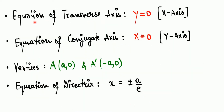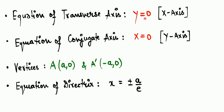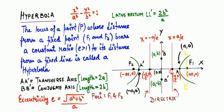Now, the equation of the transverse axis: the transverse axis lies along the x-axis, so its equation is y = 0. The conjugate axis lies along the y-axis, so its equation is x = 0.